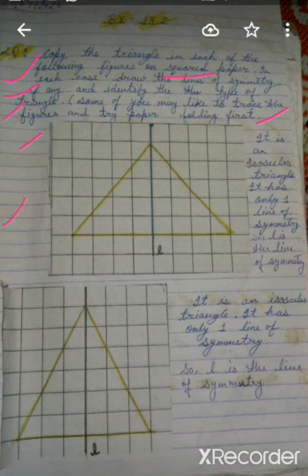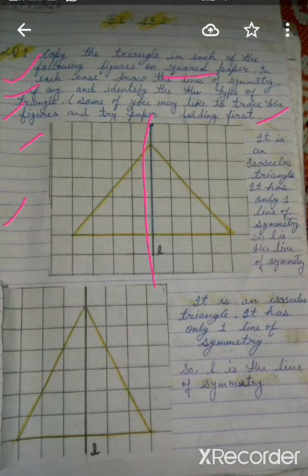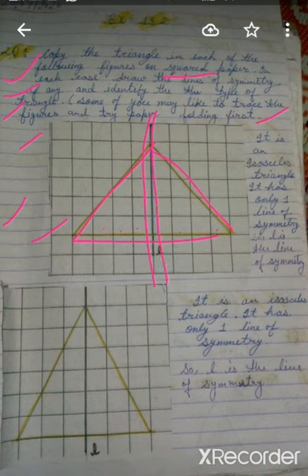For the first figure, take a square paper. Then draw a line of symmetry and count the boxes: one, two, three, four — and the same on the other side: one, two, three, four. Now draw the line and make the triangle. In this figure, it is an isosceles triangle and it has only one line of symmetry.